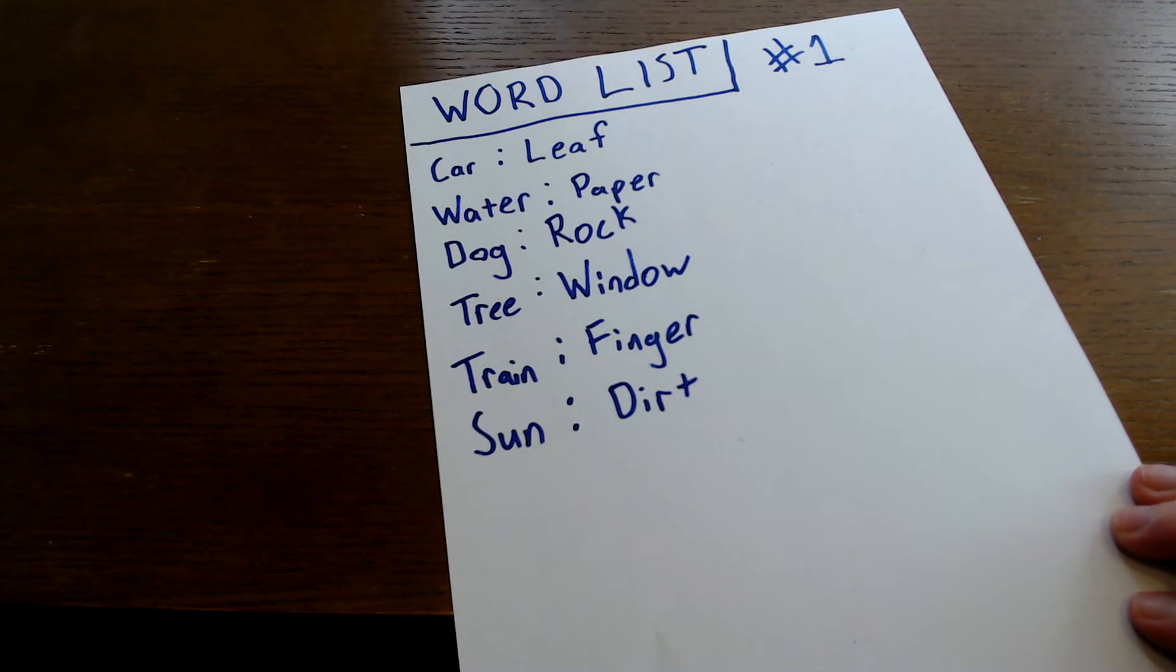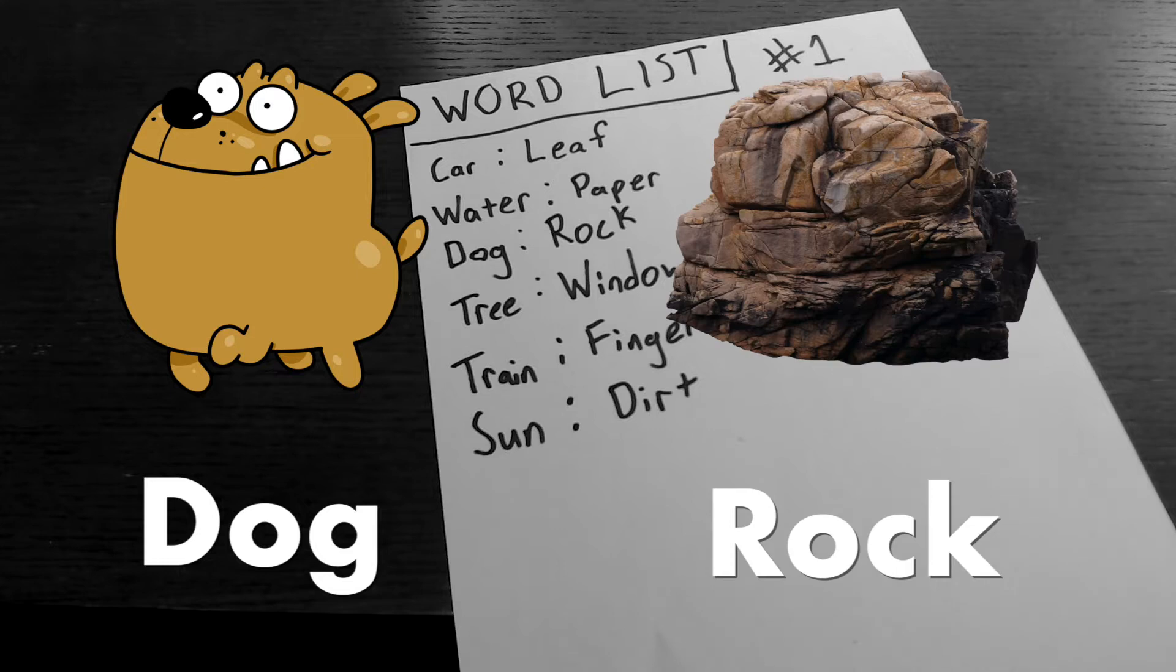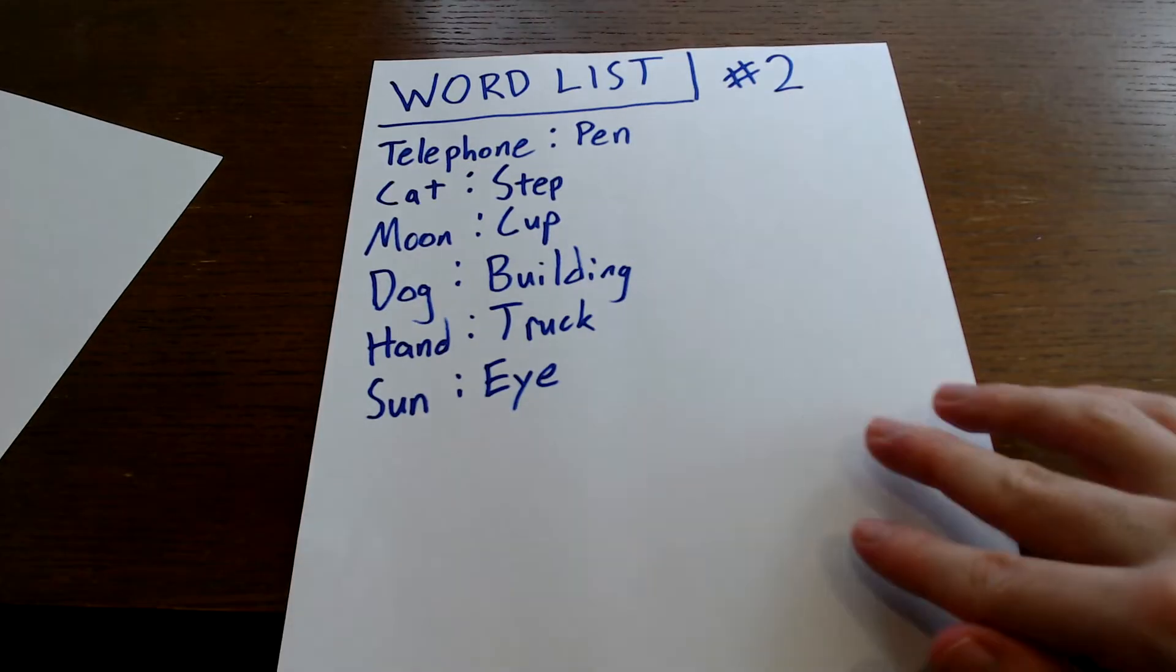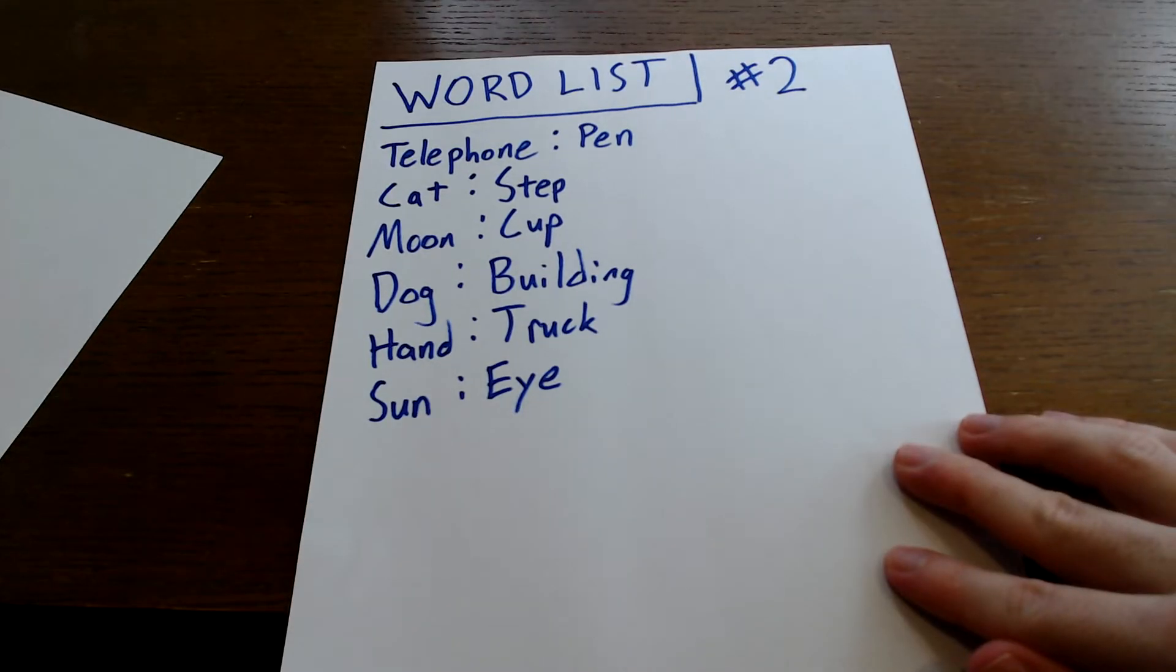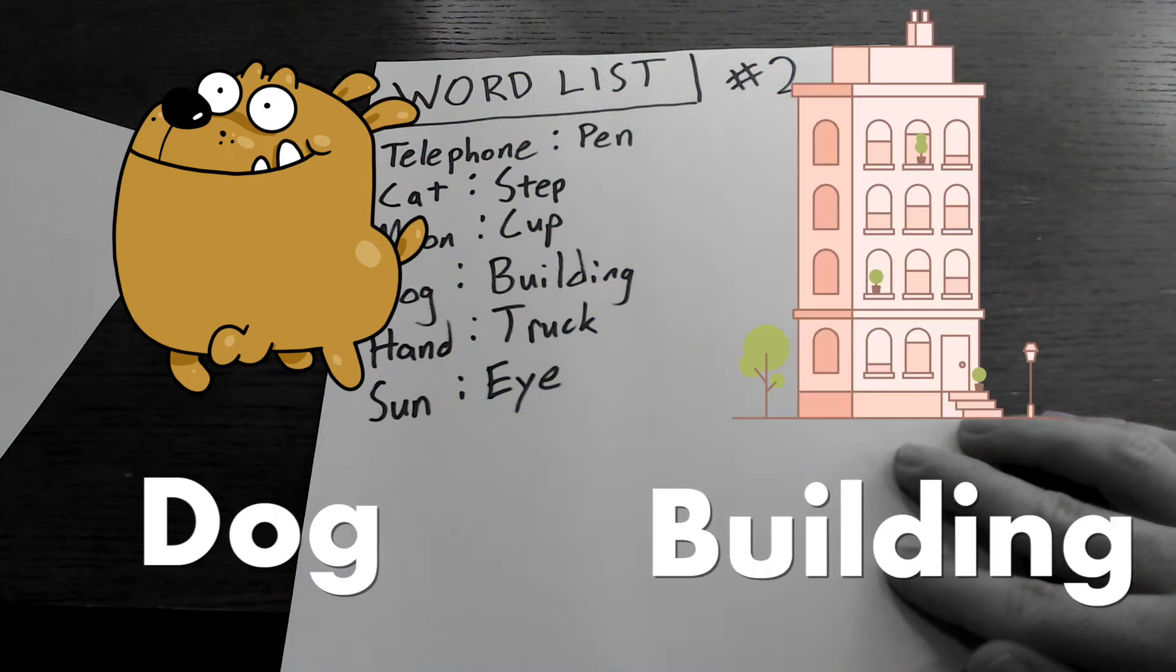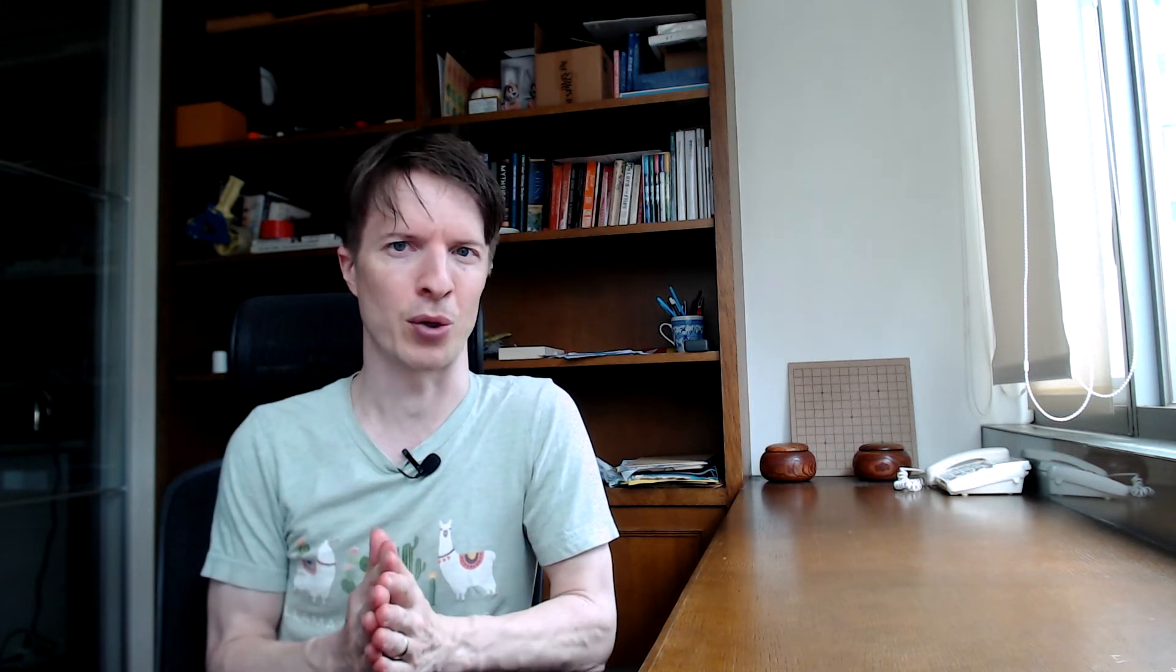Psychologists have demonstrated this over many decades using word lists. You might see on your first word list a word pair, like dog, rock, and they want you to remember that. In a second word list, you might get a word pair like dog, building, and they want you to remember that. But now we have a problem because there are two target memories that are branching off of the same cue. It's harder to remember memories that compete for cues. Your memories are still there in your head. It's just the access that's the problem.